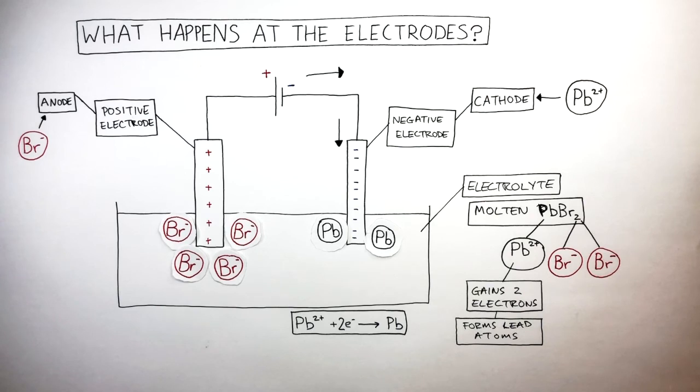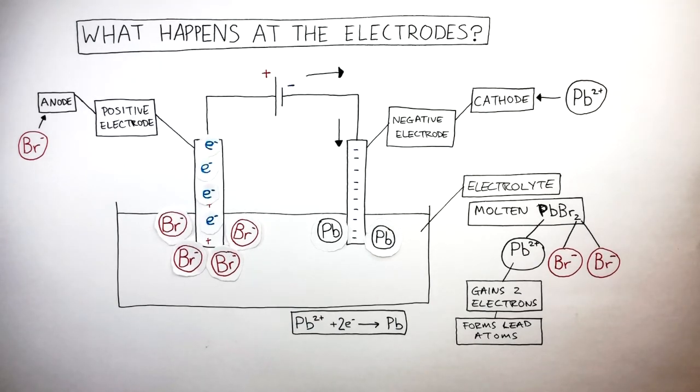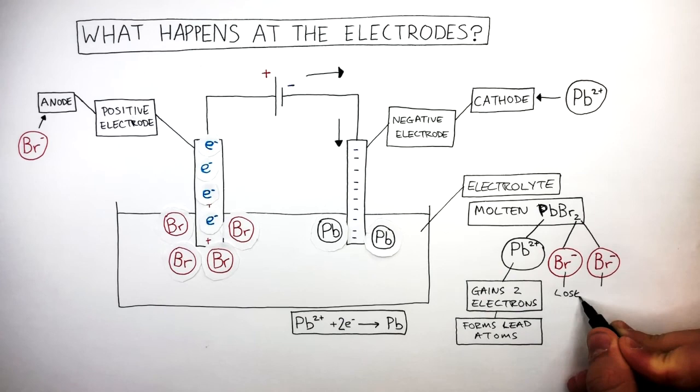Let's now focus on what happens at the anode. Bromide anions have a charge of 1- as they have one extra electron compared to protons. We can show this on a diagram where each anion has one extra electron than a bromine atom. What happens at the anode is this electron is lost. Each anion loses one electron to the anode to become a bromine atom. So each bromide anion loses one electron which forms bromine atoms.